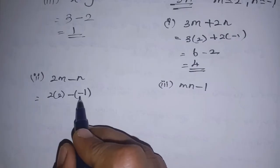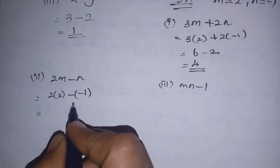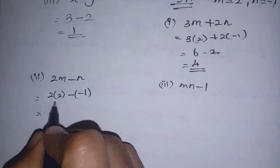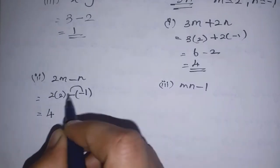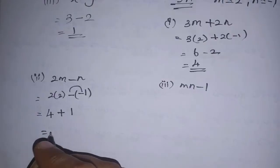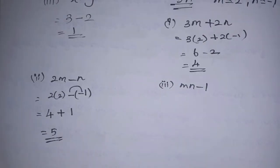We need to handle the sign carefully when removing brackets. Plus times minus gives minus, and minus times minus gives plus. So 2 twos are 4, and minus times minus gives plus 1. Therefore 4 plus 1 equals 5. The answer is 5.